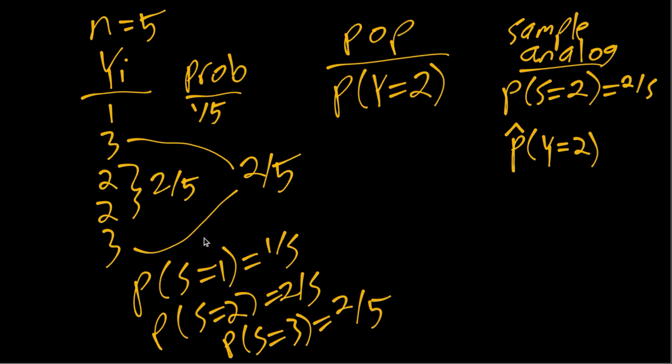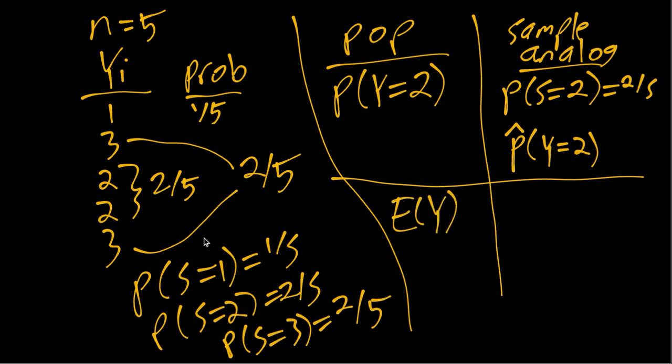And then as another example in the population, we might be interested in the mean of y. And so by this plug-in principle or analogy principle would suggest maybe we should look at the sample analog. So again, we'll put a hat over the thing we're interested in. And the idea is again, we do the same feature but for s instead of y. So that would be in this case the expected value of s.